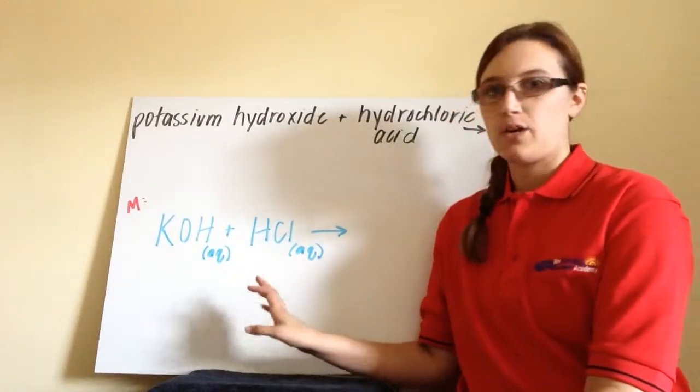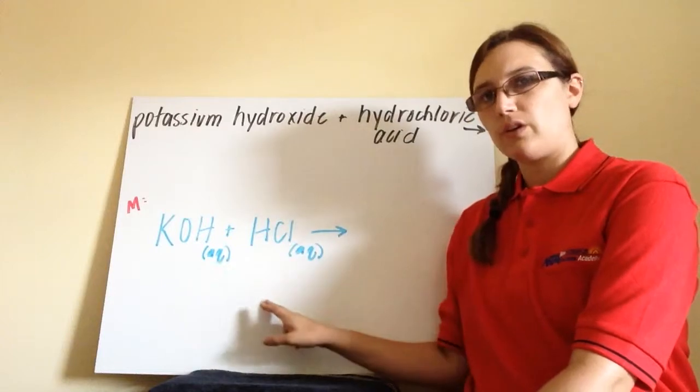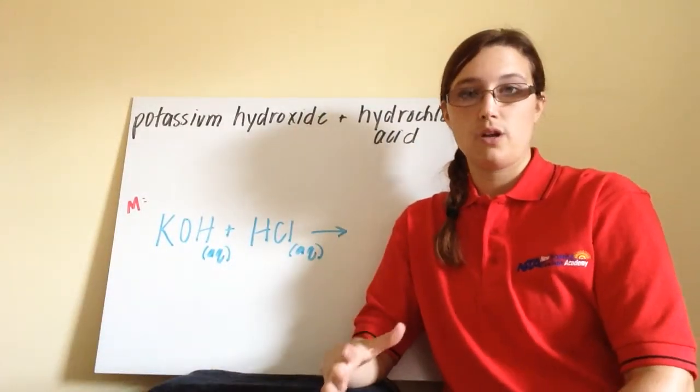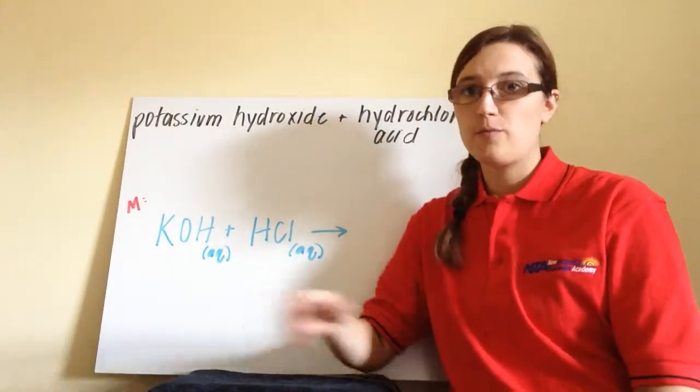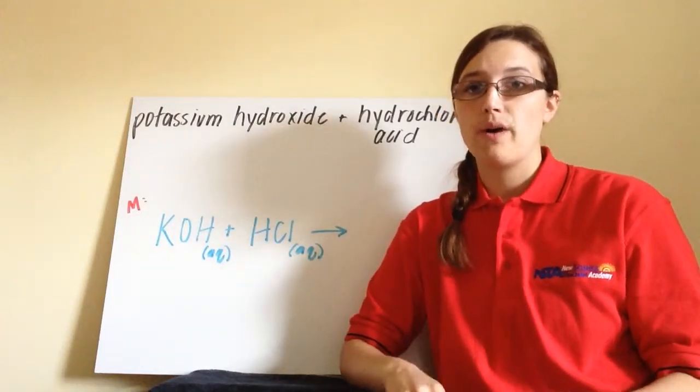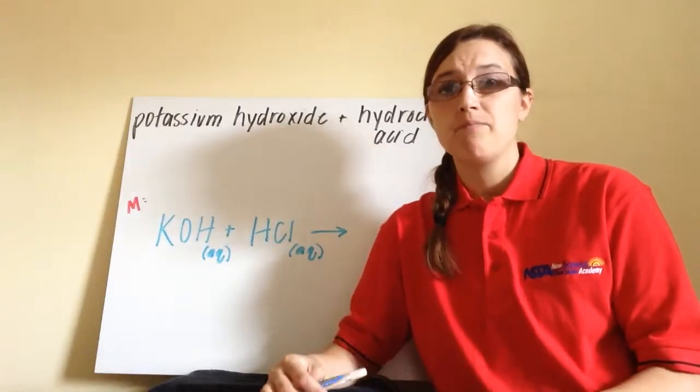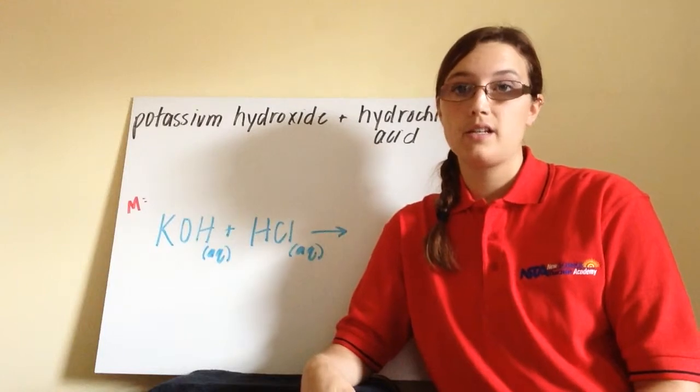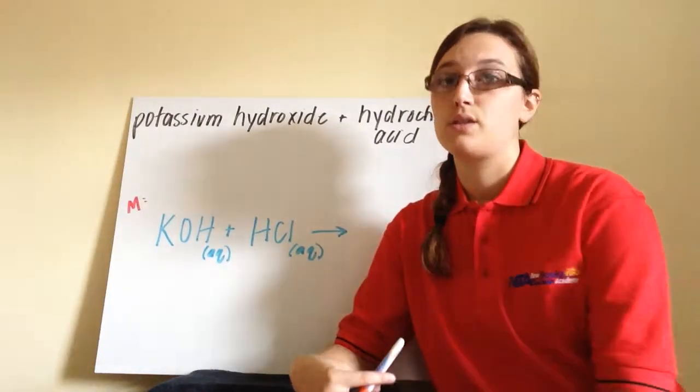Now, I also wrote in aqueous for both reactants. We can use our solubility rules or use other information that you're supposed to know in order to determine these states of matter. If you remember, anything with potassium, nitrate, ammonium, or sodium is always soluble. So potassium hydroxide is aqueous because it's a strong base. Remember, strong bases are electrolytes. That makes them aqueous in solution.